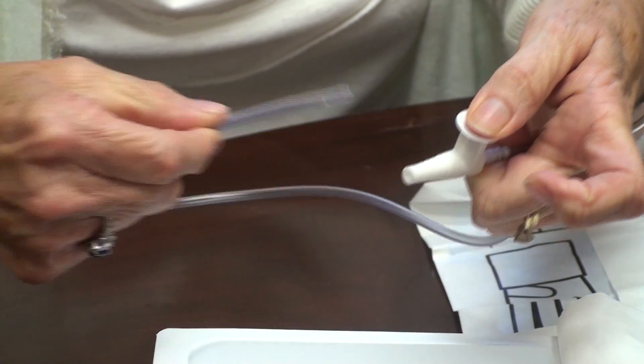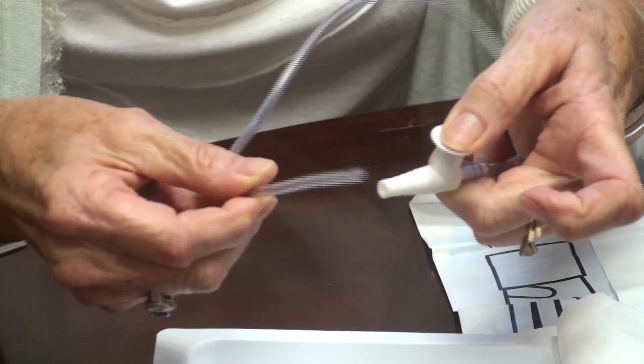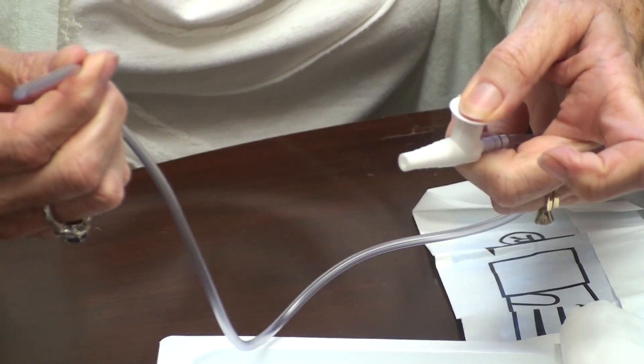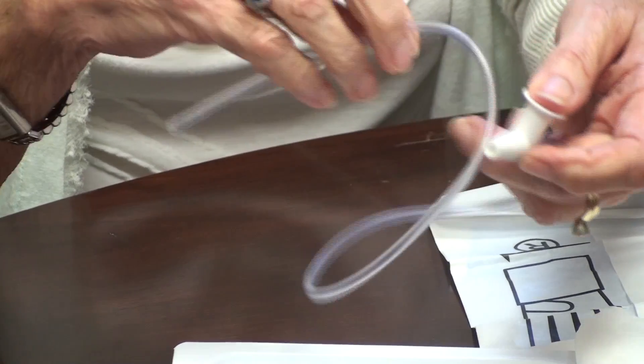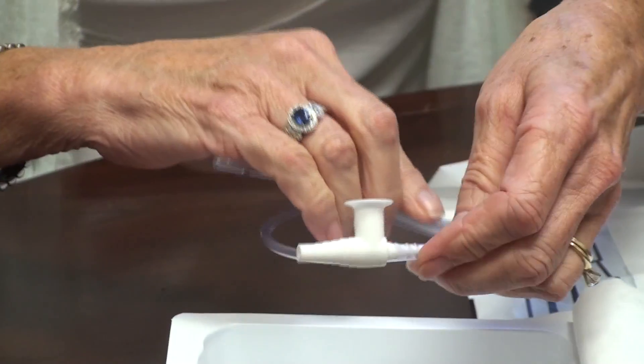And that will make it a closed sealed system so that you will be able to suction the secretions out of the mouth or the nose or the trach, whichever one you are using for skills lab. And that's what this kit looks like.